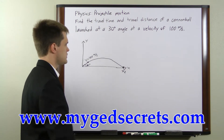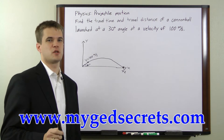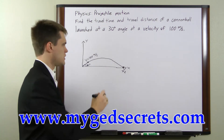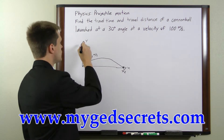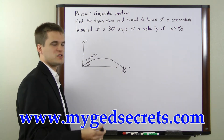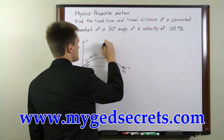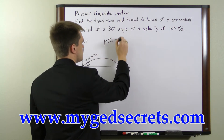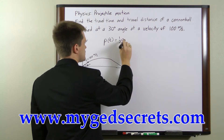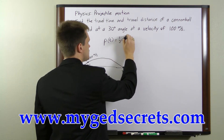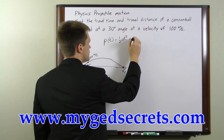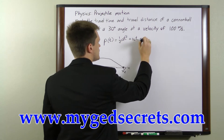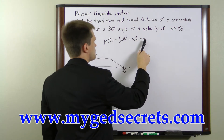To solve this, we're going to need to use equations of motion. Since it's two-dimensional, we're going to have to use two different equations of motion — one for the X direction and one for the Y direction. Your basic equation of motion looks like this: position at time t equals one-half times the acceleration of the object times t squared, plus your initial velocity v-naught times t, plus your initial position p-naught.